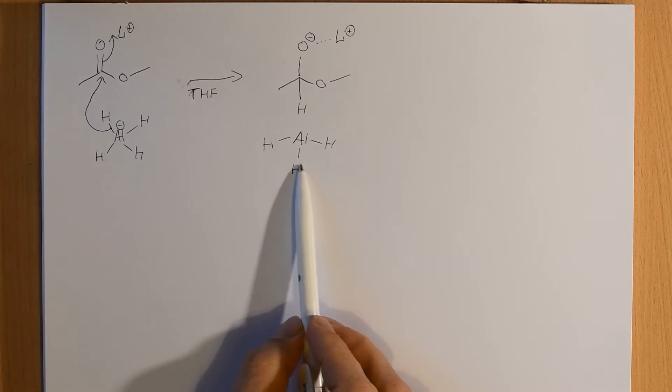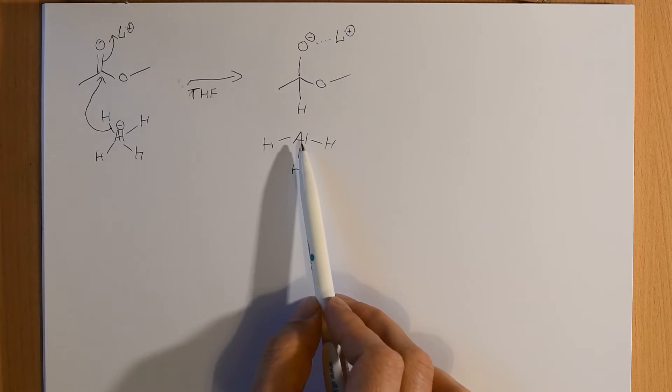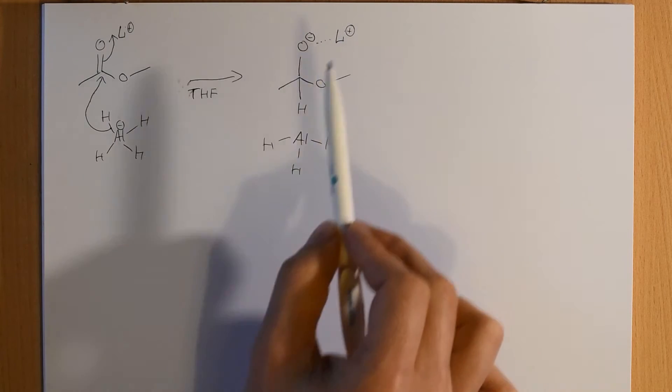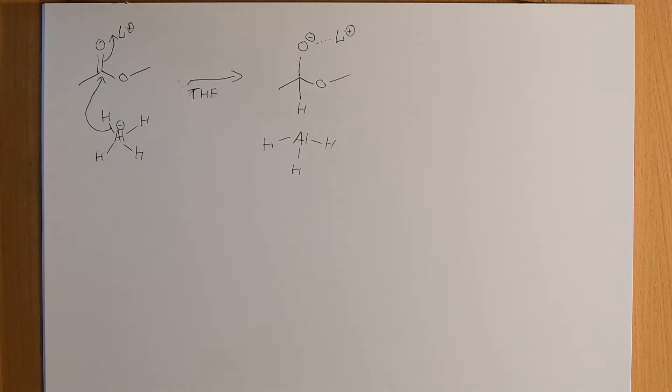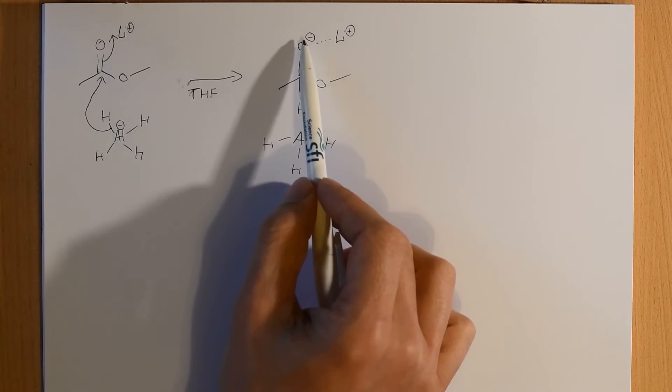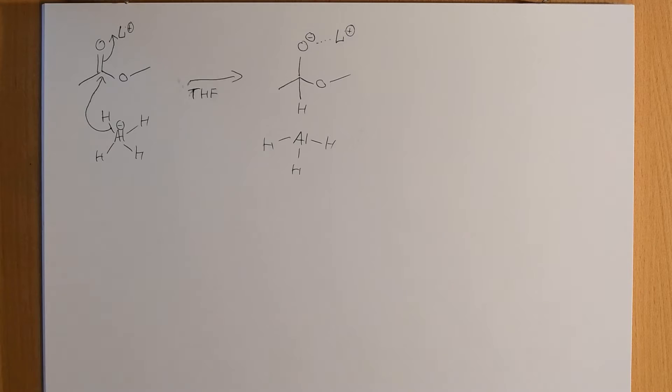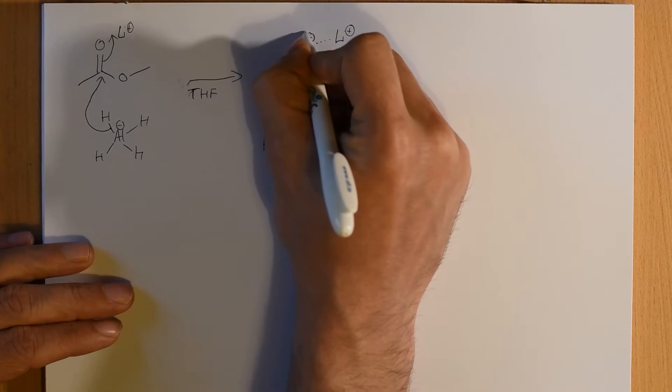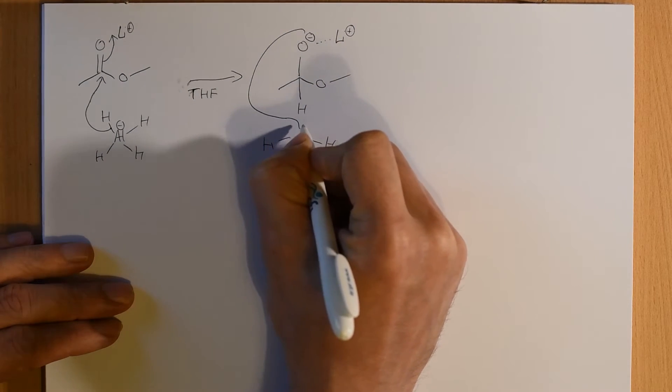This, however, is a much better Lewis acid than the lithium is. It's capable of forming a much stronger bond to the oxygen than the lithium is. And so, that's exactly what will happen. The aluminum will coordinate to that oxygen very quickly. So, the oxygen will donate its lone pair to the aluminum.